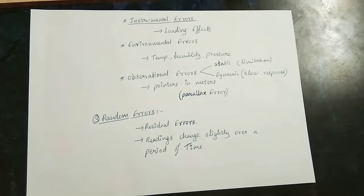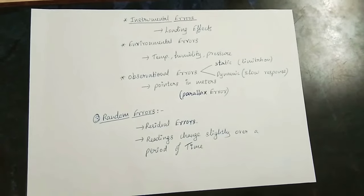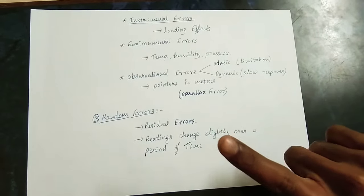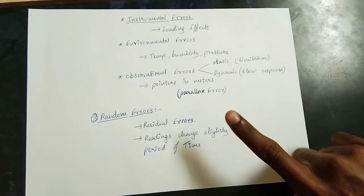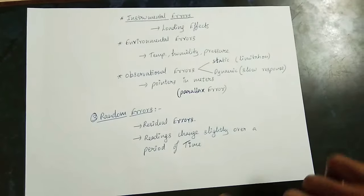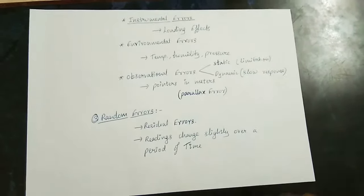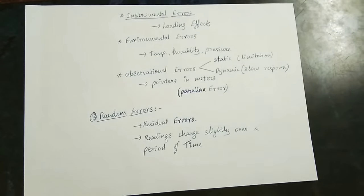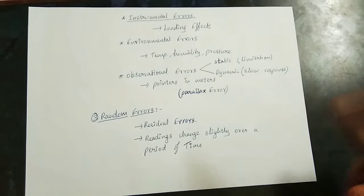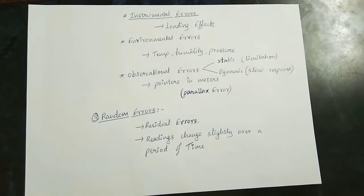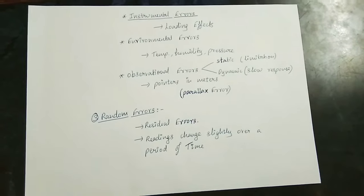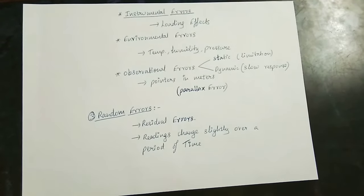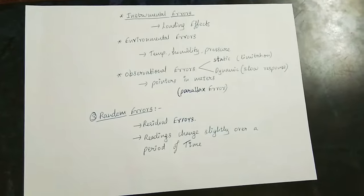In the measurement system there is a scale and a pointer. The pointer aligns with the scale. When you read the pointer correctly aligned with the scale, you may read 5.2, but the correct reading is 5.3. If the pointer and scale do not coincide properly due to viewing angle, this is a parallax error.